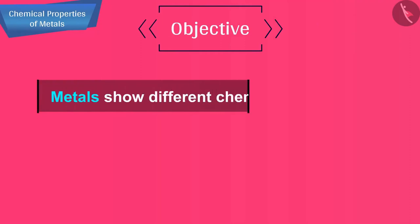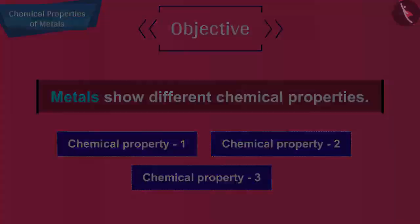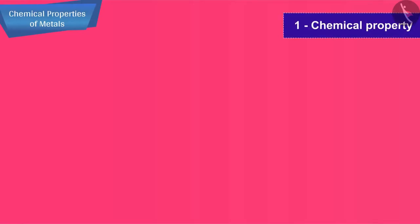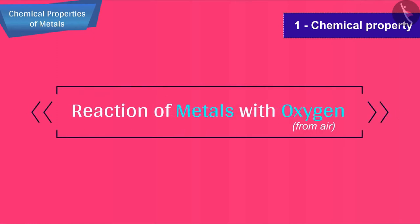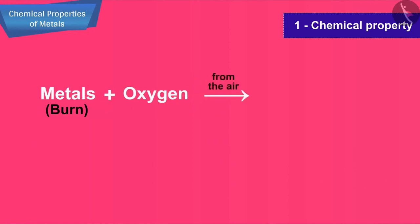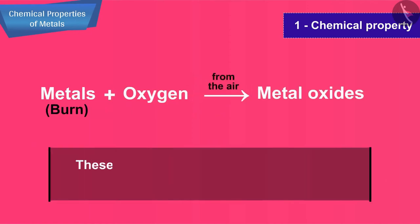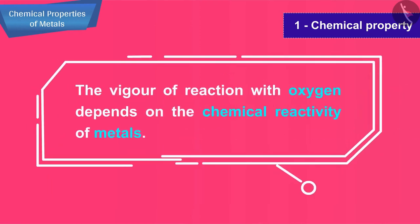Metals show different chemical properties. Let's begin and study them one by one. The first chemical property of metals that we are going to discuss is the reaction of metals with oxygen from air. When metals are burnt in air, they react with oxygen from the air to form metal oxides. These metal oxides are basic in nature and therefore they will turn red litmus solution blue. The vigour of reaction with oxygen depends on the chemical reactivity of metals.